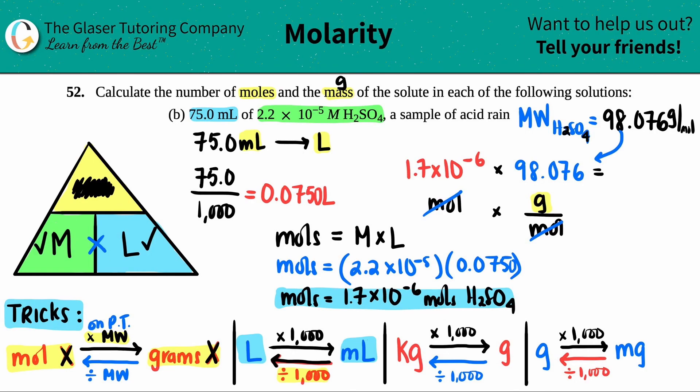Let's do it. 1.7 times 10 to the negative 6 times the molecular weight. And two sig figs, so I'll round and say 1.7 times 10 to the negative 4th, and that's in the unit of grams of H2SO4. A very, very, very small amount of grams because we had a very, very, very small amount of moles because we had a very low molarity. They're all interchanged with each other, they're all related.